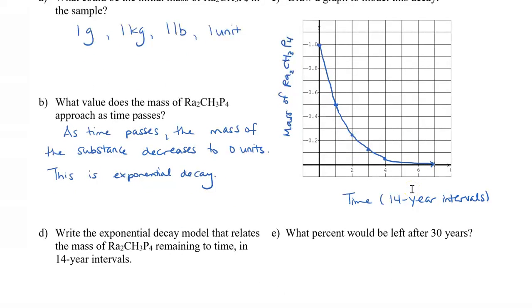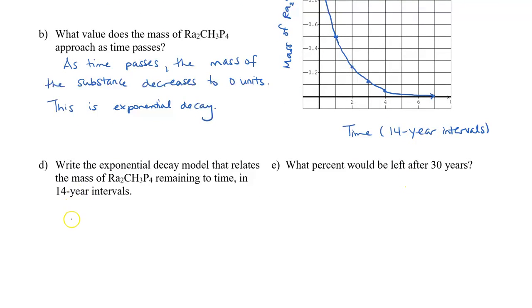So write the exponential decay model that relates to the mass remaining to the time in 14 year intervals. So the amount of substance that we have is equal to half, because that's how we're decaying. That's our decay factor. And our time is going to be x. So it's important here, however, that we need to identify that x is the number of 14 year intervals. So that you don't get mixed up that x is actually every year. Because if you don't write this, actually x will be every year.